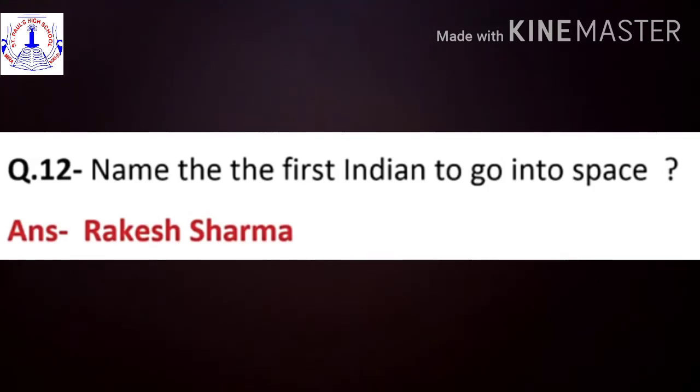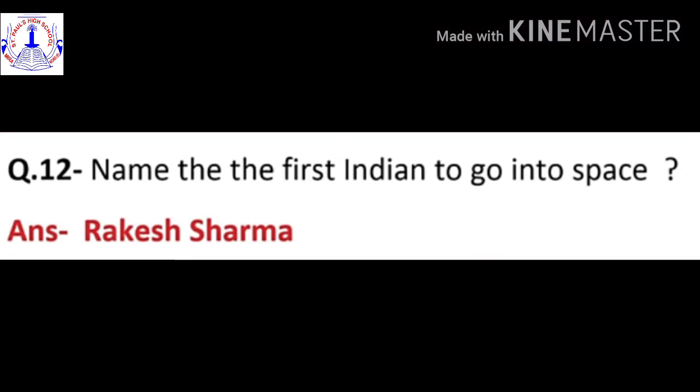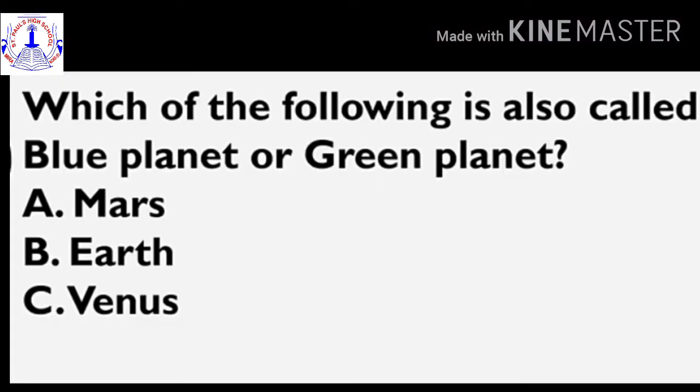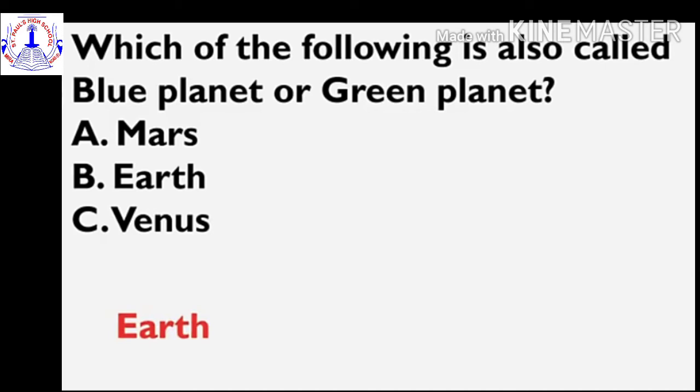Now you have to select the correct answer from the options given below. Which of the following is also called blue planet or green planet? The options are Mars, Earth, and Venus. Okay good, the answer is Earth.